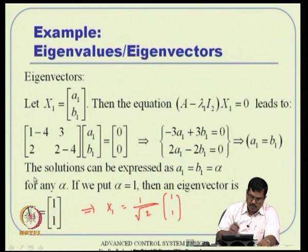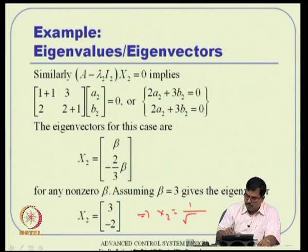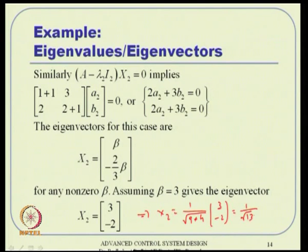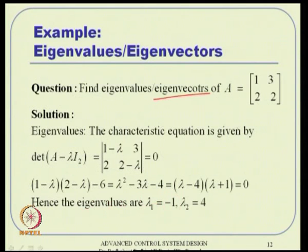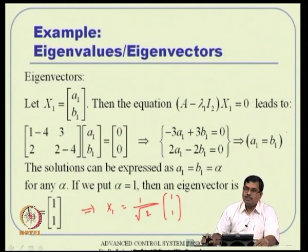Normalization is important depending on the application. For example, in similarity transformation, if you start with normalized eigenvectors as columns of the P matrix, P transpose equals P inverse, which gives nice computational properties.